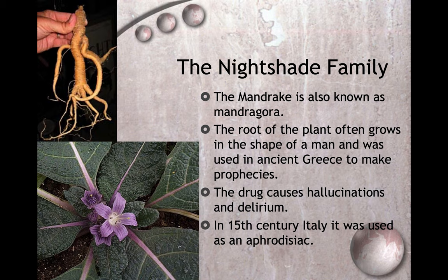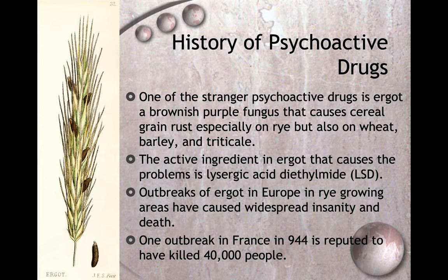The mandrake, also known as mandragora, has a root that often grows in the shape of a man and was used in ancient Greece to make prophecies. The drug causes hallucinations and delirium. In 15th-century Italy it was used as an aphrodisiac — in other words, it made people want to have sex.